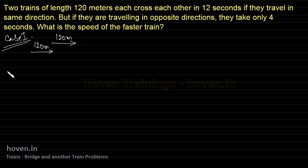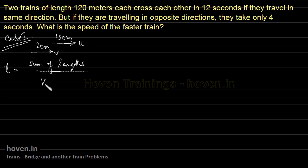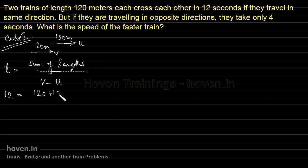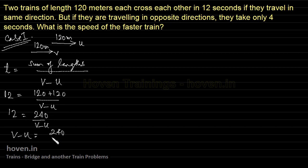For Case 1 — same direction: the time taken equals sum of lengths divided by the difference of speeds, because the relative speed is v minus u when both trains move in the same direction (v being the faster train). Putting in figures: 12 equals 240 divided by v minus u, giving v minus u equals 20. This is the first equation.